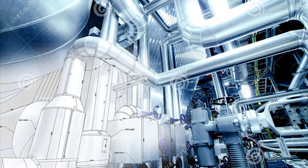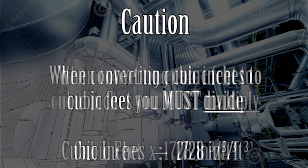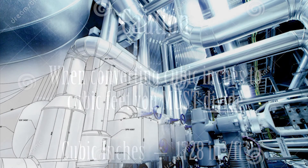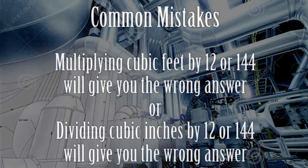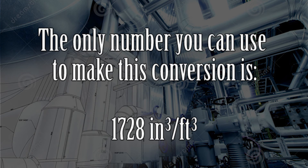Now it is very important that you do your math the correct way. When you go from cubic feet to cubic inches, you need to multiply by 1,728. When you want to go from cubic inches to cubic feet, you need to divide by 1,728. If you go the wrong way, you will get the wrong answer. Let's talk about the two most common mistakes made while making this conversion — they both involve multiplying the cubic footage by the wrong number. 12 and 144 are the most common wrong numbers chosen for this conversion. You cannot use those numbers; the only number you can use is 1,728.